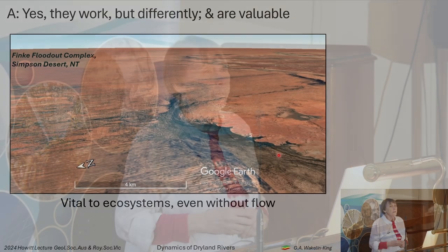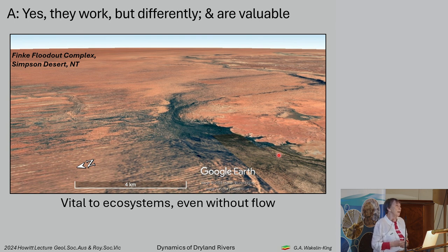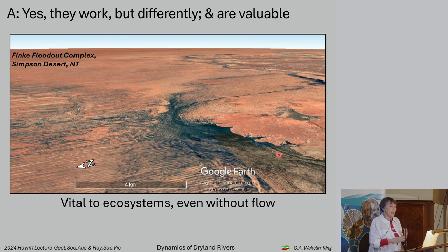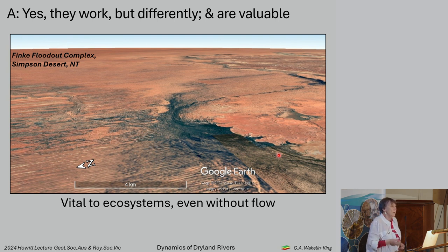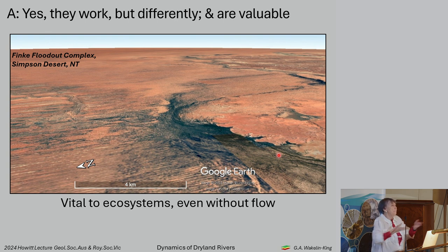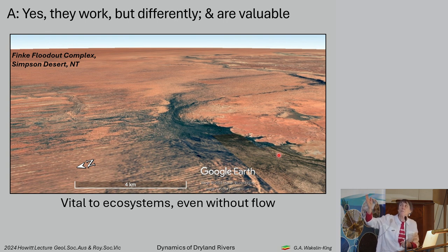Dryland fluvial systems are complex and also really valuable. This is the Fink flood-out complex where the Fink River comes down and floods out into the Simpson Desert. Everything that's red is inorganic — either sediment like dune fields or rock like Gibber Plain or Silcrete. Everything black or grey is plant community. Even though there are not many deep channels here, buckets of water come down and support terrestrial ecosystems way out in two directions into the Simpson Desert.